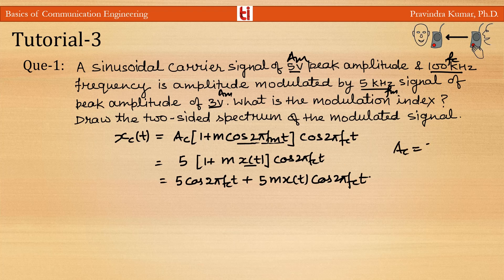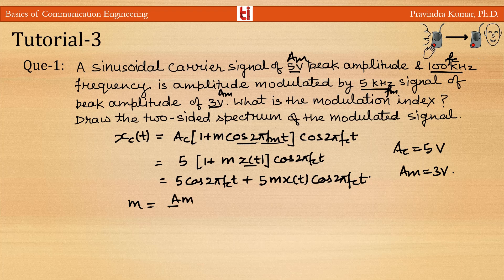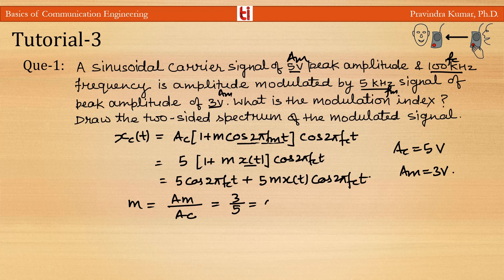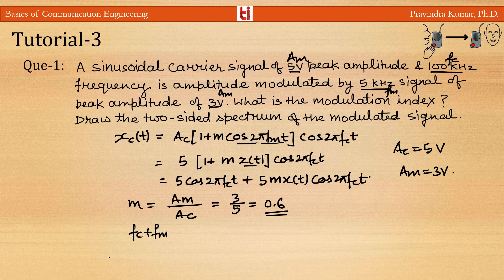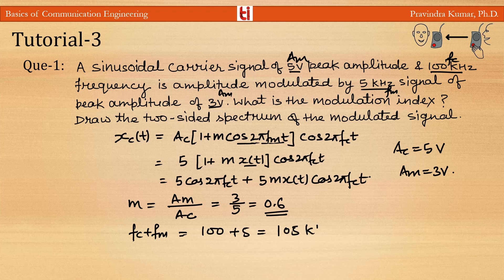Here Ac = 5 volt and Am = 3 volt. The modulation index m = Am/Ac = 3/5 = 0.6. The frequency of the upper sideband is fc + fm = 100 + 5 = 105 kilohertz.